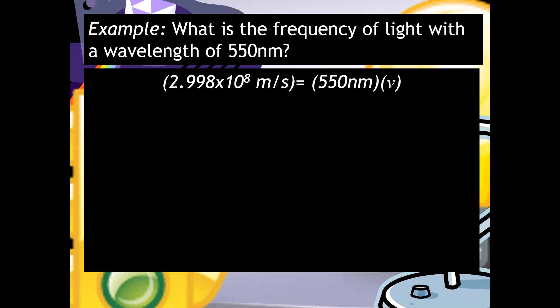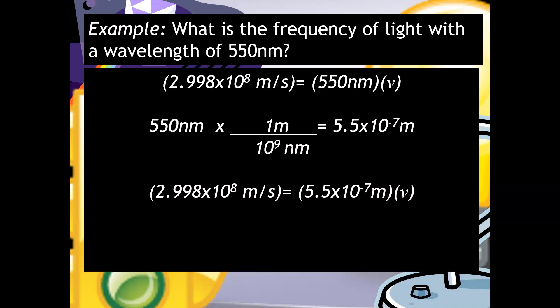The other thing that you need to do is you need to plug in the wavelength. So notice I plugged in 550 nanometers. But if you're looking at this, hopefully you're recognizing that there's something wrong with the units compared to speed of light and wavelength. And so that's why it's incredibly important that you convert the 550 nanometers into meters in order to get those units to cancel out appropriately. So all I did was I did my dimensional analysis calculation and I got 5.5 times 10 to the minus 7 meters.